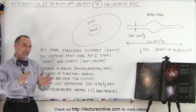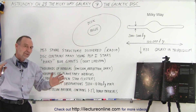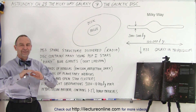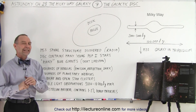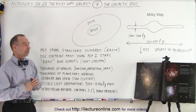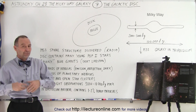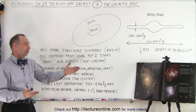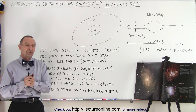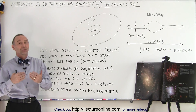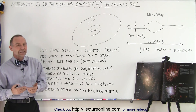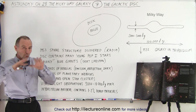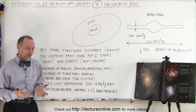Let's move out a little bit further from the galactic bulge and talk about the disk, the galactic disk of the Milky Way galaxy. We don't have a picture of our Milky Way galaxy, so I put up a picture of M33, the galaxy in Triangulum.